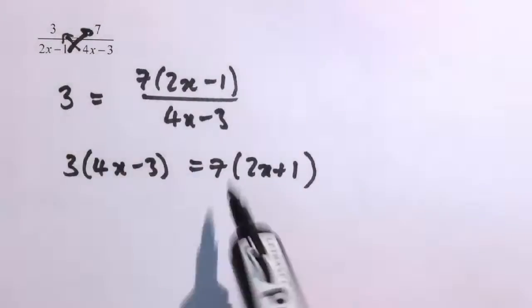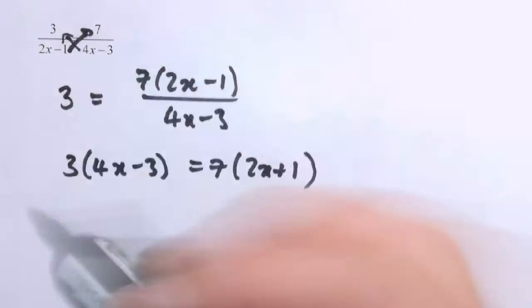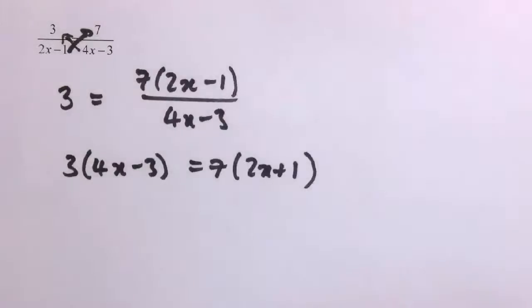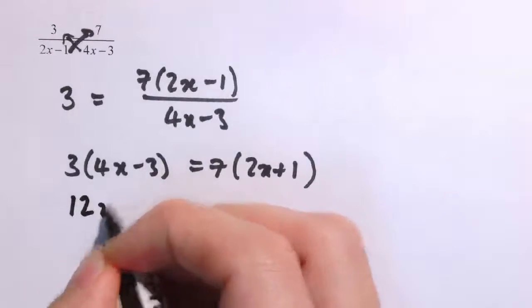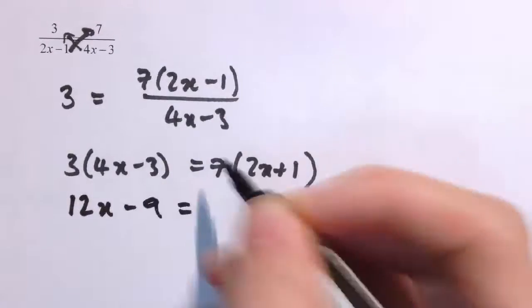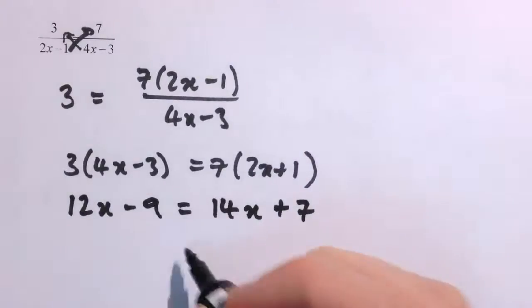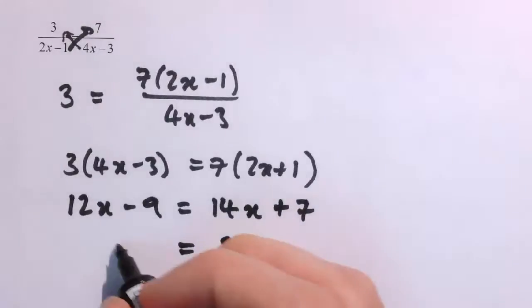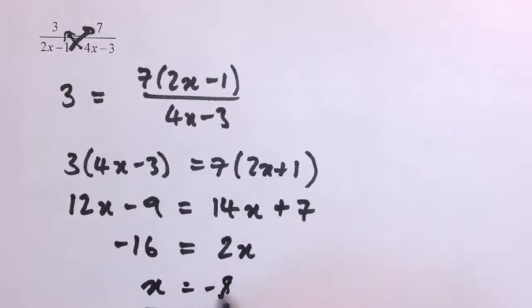In this particular case where we have just two fractions equal to each other, some people use the shortcut of cross-multiplying — that times that equals that times that — but be careful if there's an extra term. Either way we get to the same point. Multiplying out: left-hand side gives 12x minus 9, right-hand side gives 14x plus 7. Collecting x's: subtract 12x from each side to give 2x, then subtract 7 to give minus 16. So 2x equals minus 16, meaning x equals minus 8.